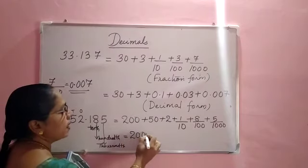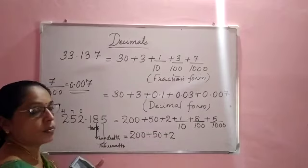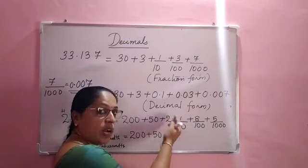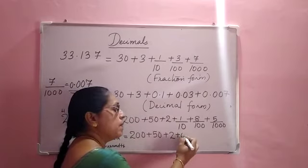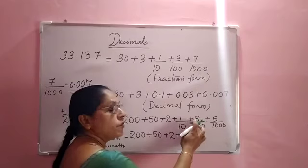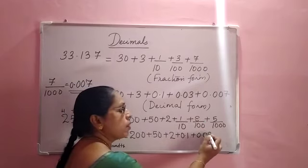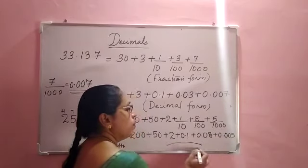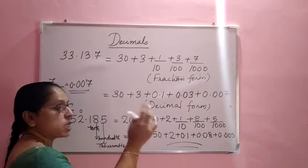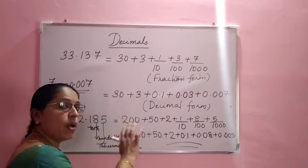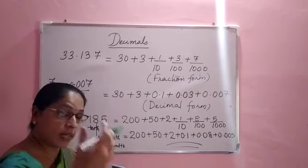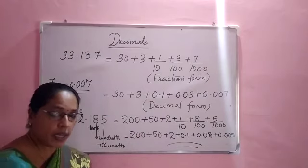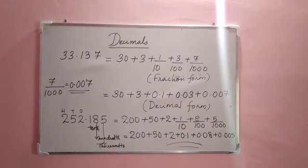Now the decimal form: 200 + 50 + 2. How do you write 1/10? Shift 1 place to the left — it becomes 0.1. Then 8/100: shift 2 places — it becomes 0.08. And 5/1000: shift 3 places — it becomes 0.005. So both are expanded forms of a decimal number — one is the fractional form and the other is the decimal form. These are the basic things in this chapter before we enter the new concepts.